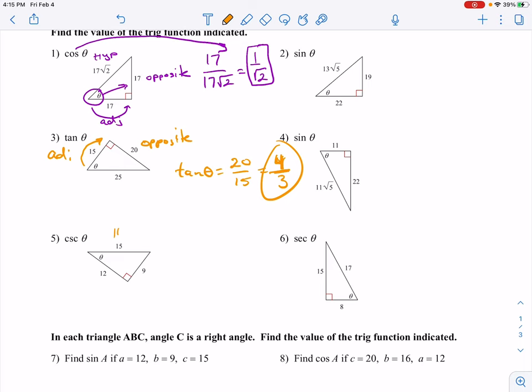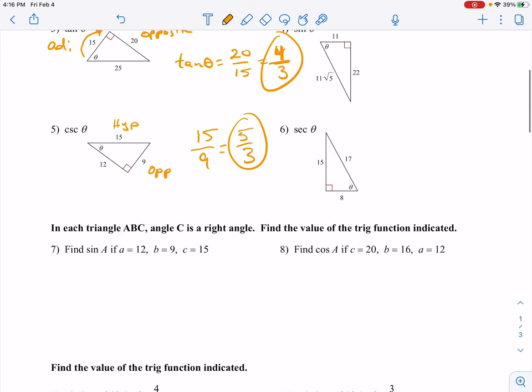So cosecant is the hypotenuse over the opposite. So 15 over 9. Simplify your fractions. What's that, 5 thirds. And you guys can do number 6.